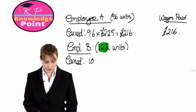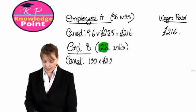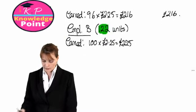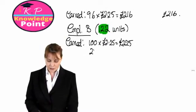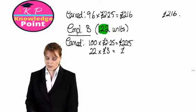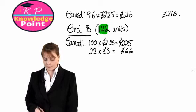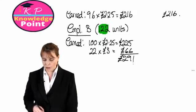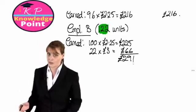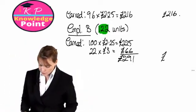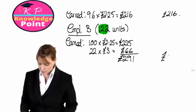If employee B has produced 122 units, then for the first 100 they're getting £2.25, which gives us £225. And for the remaining 22 units, they're getting £3 each, which is £66. So in total, they have earned £291. This is well above the minimum wage, so we're going to pay them the £291.